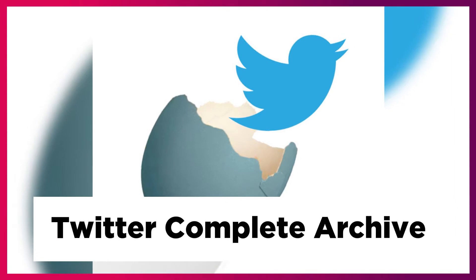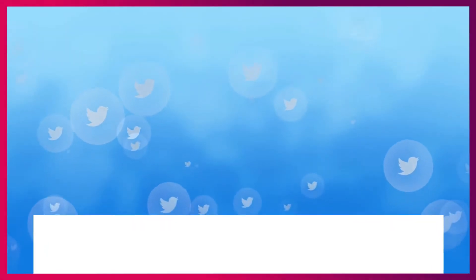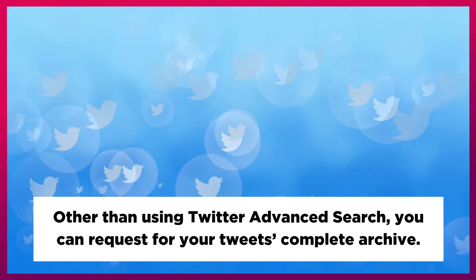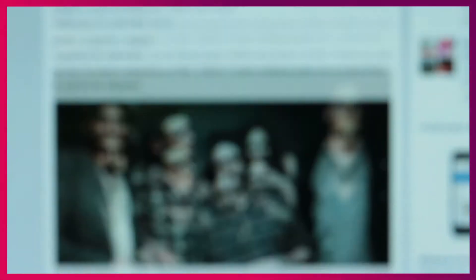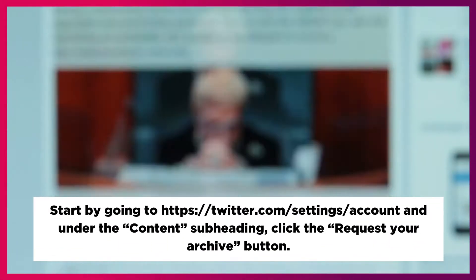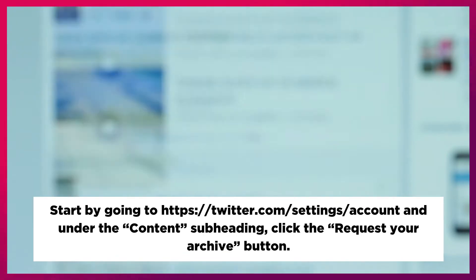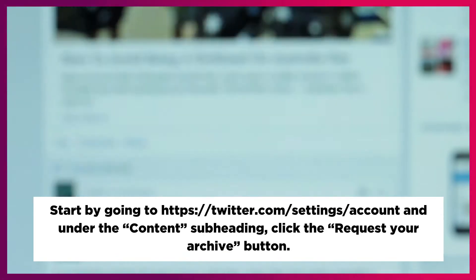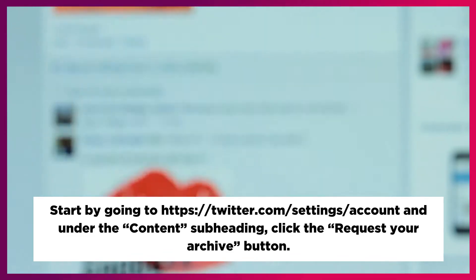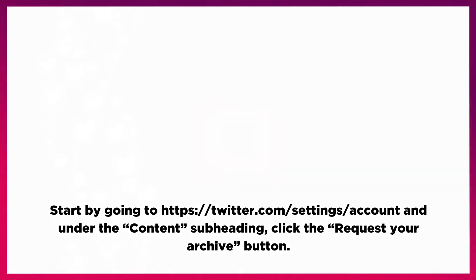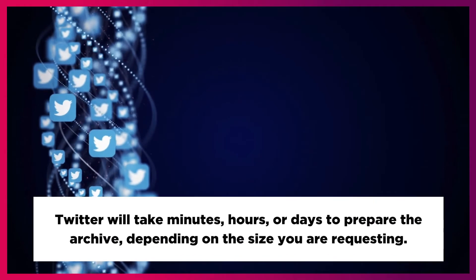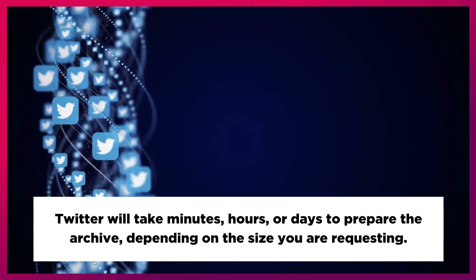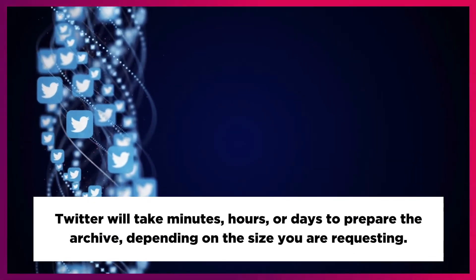Other than using Twitter Advanced Search, you can request your tweets complete archive. Start by going to https://twitter.com/settings/account and under the Content subheading, click the Request Your Archive button. Twitter will take minutes, hours, or days to prepare the archive, depending on the size you are requesting.